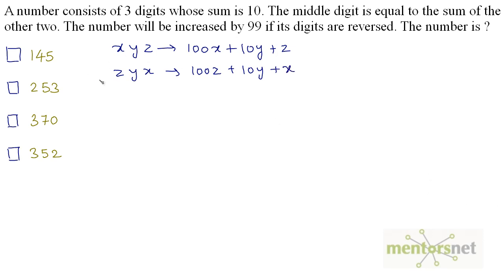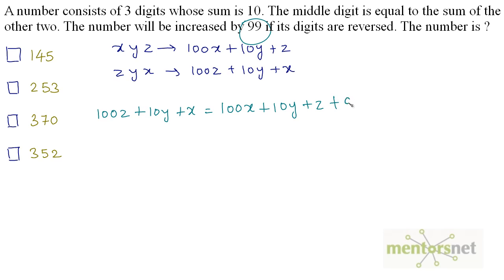It is given that if the digits are reversed, the original number's value is increased by 99. So we write: 100z plus 10y plus x equals 100x plus 10y plus z plus 99. Cancelling 10y from both sides, 99z equals 99x plus 99. Dividing throughout by 99, we get z equals x plus 1.